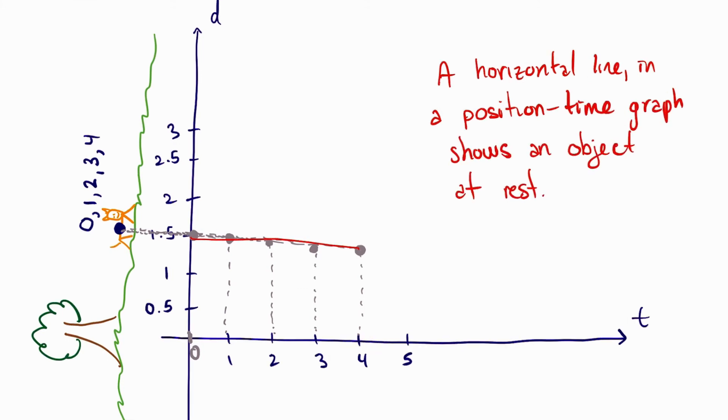So we can make a note by saying that a horizontal line in a position time graph shows an object at rest.